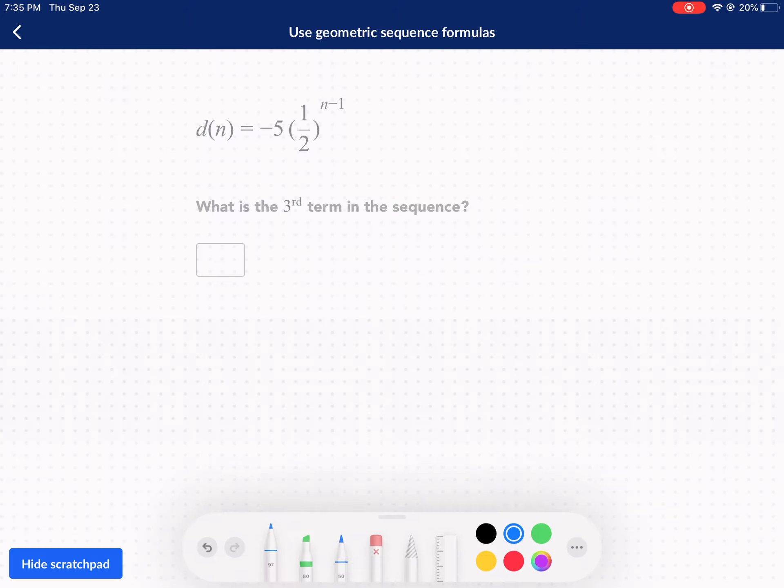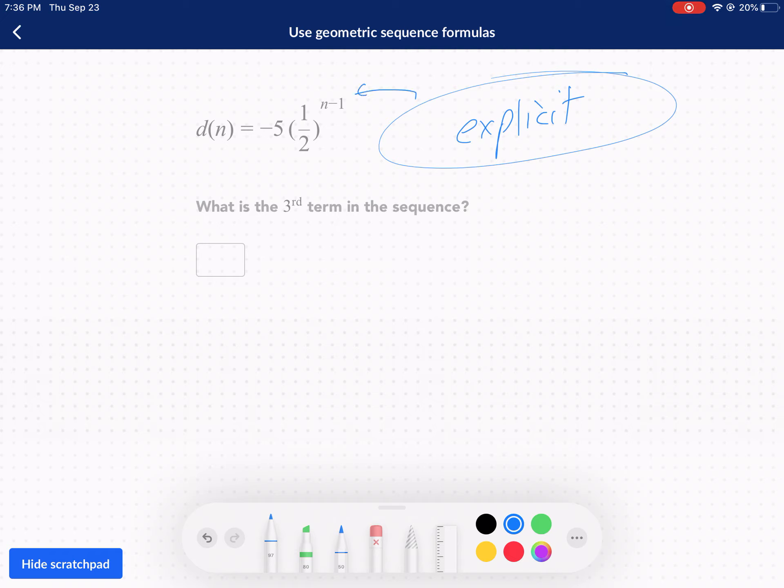What is the third term? Notice how it doesn't give us the first term. This is explicit. Well, that means we can just punch it right in. We can plug this directly in and it will tell us our third term. Explicits are the way to go. People, they are great. Makes it a lot easier. So d of three, d(3) equals negative five times one half to the three minus one. I just substitute that n with a three. So I have negative five times one half to the second power.